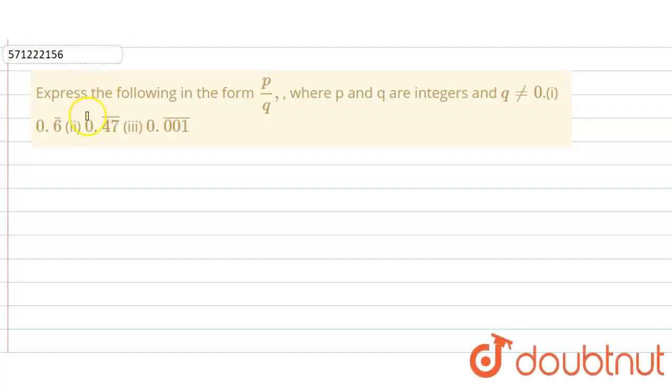In the given question we have to represent the following irrational numbers in the form of p by q, where p and q are integers.